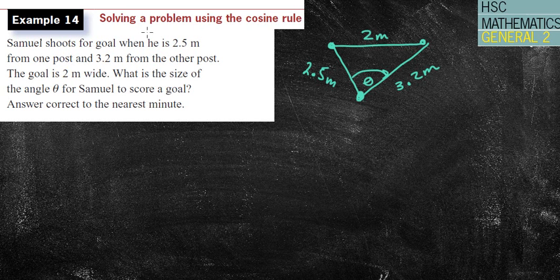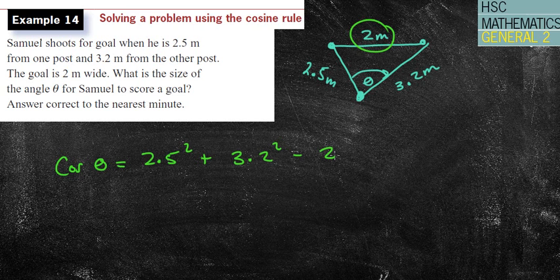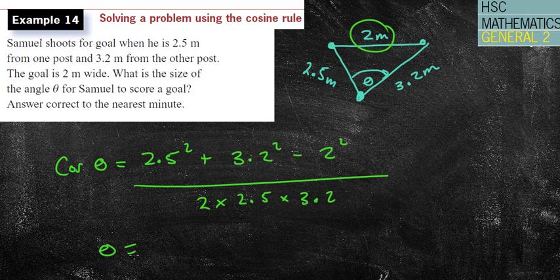Now we're finding theta, so remember we're using the cos theta rule. We'll be subtracting the two because it's opposite the theta. So I'm going to do (2.5² + 3.2² - 2²) / (2 × 2.5 × 3.2). Now again, that will give me what cos theta is. So again, I'm going to put it into my calculator.